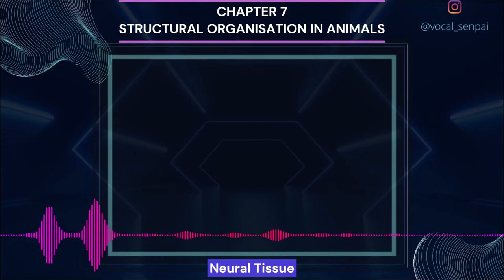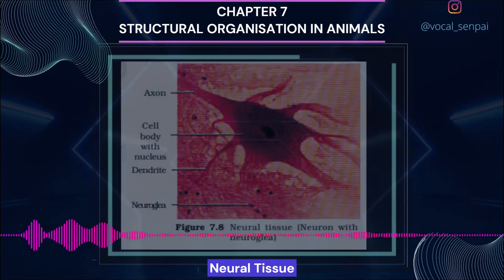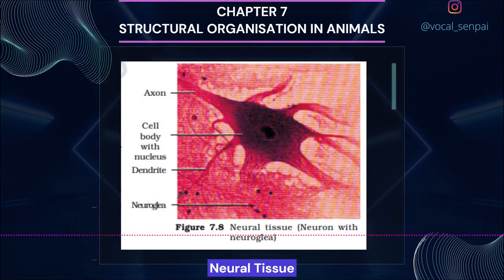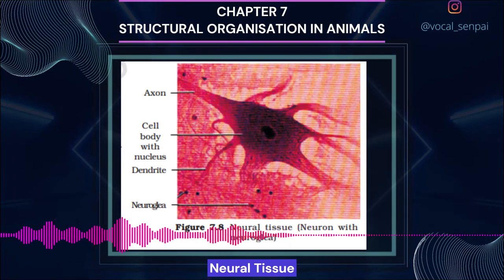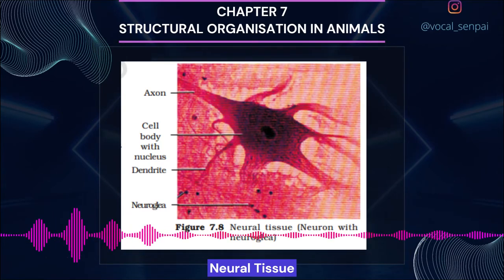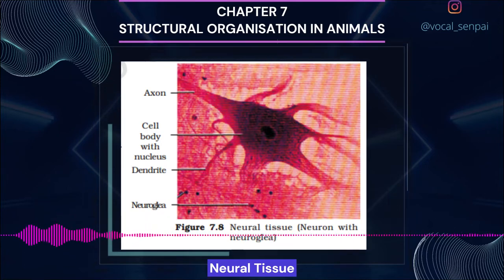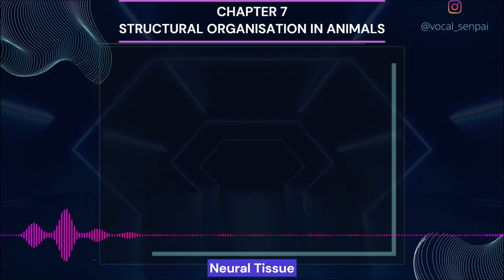Neural tissue exerts the greatest control over the body's responsiveness to changing conditions. Neurons, the unit of the neural system, are excitable cells (figure 7.8). Neuroglial cells, which constitute the rest of the neural system, protect and support neurons; neuroglia make up more than one half the volume of neural tissue in our body. When a neuron is suitably stimulated, an electrical disturbance is generated which swiftly travels along its plasma membrane. Arrival of the disturbance at the neuron's endings triggers events that may cause stimulation or inhibition of adjacent neurons and other cells.